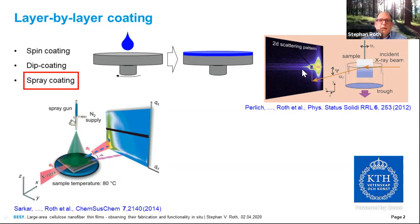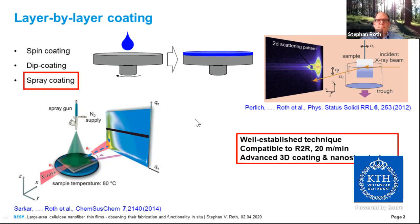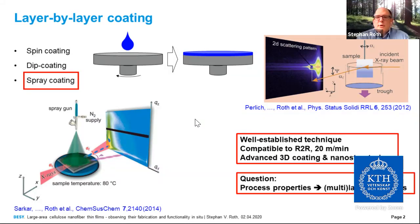As already shown, we will use scattering methods to observe the patterning or fabrication process during spray coating and different coating procedures in situ. Spray coating is a well-established technique, compatible with roll-to-roll coating at about 20 meters per minute displacement velocity, and you can also do advanced three-dimensional coating as well as nanostructuring. The key question we want to answer is: how do the process properties from the fabrication process affect the layer or multi-layer properties?